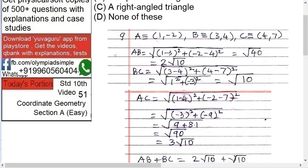AC: √[(1-4)² + (-2-7)²]. Solve it and you get √90, that is 3√10. Now you see what is the link between these: 2√10, √10, and 3√10.